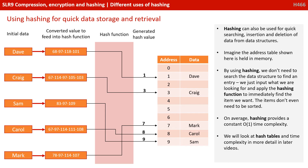Hashing can also be used for quick searching, insertion, and deletion of data from data structures. Imagine the address table shown on the right here is held in main memory. By using hashing, we don't need to search memory to find an entry. We just input what we're looking for and apply a hashing function to immediately find the item we want. The items don't even need to be sorted. On average, this means hashing provides a constant O(1) time complexity. We're going to be looking in a lot more detail at hash tables and algorithm time complexity in a later section.